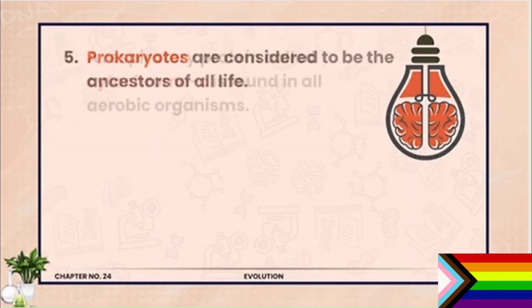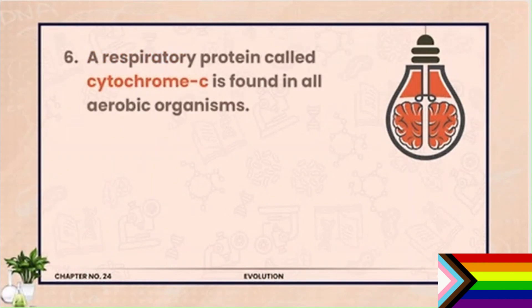Question 6. The protein called Cytochrome C is found in all aerobic organisms. Cytochrome C is found in all aerobic organisms.